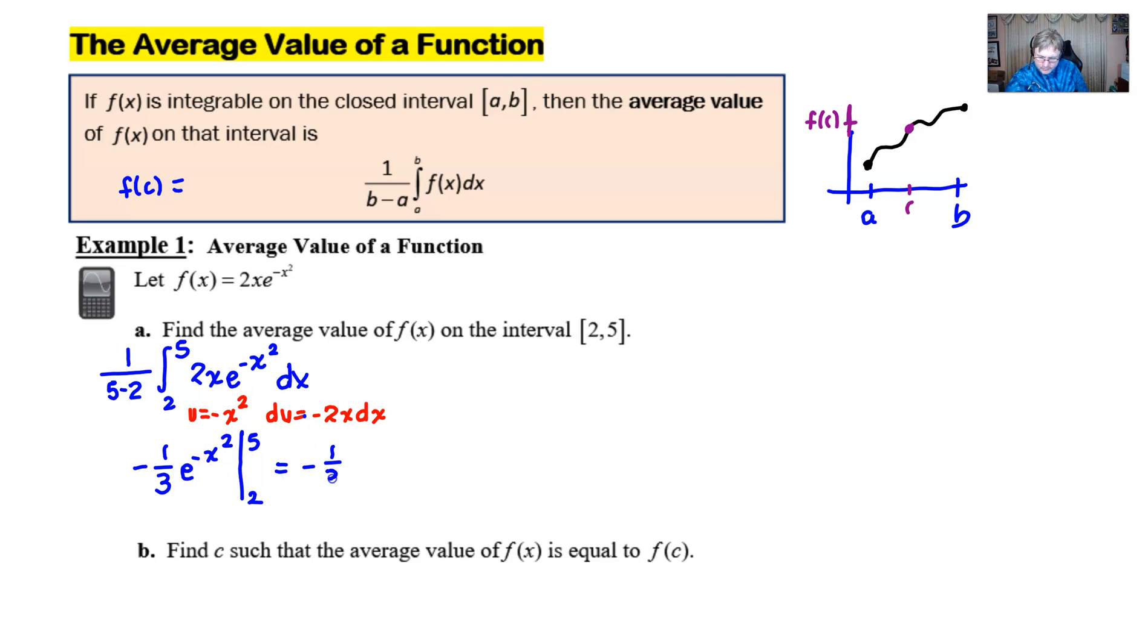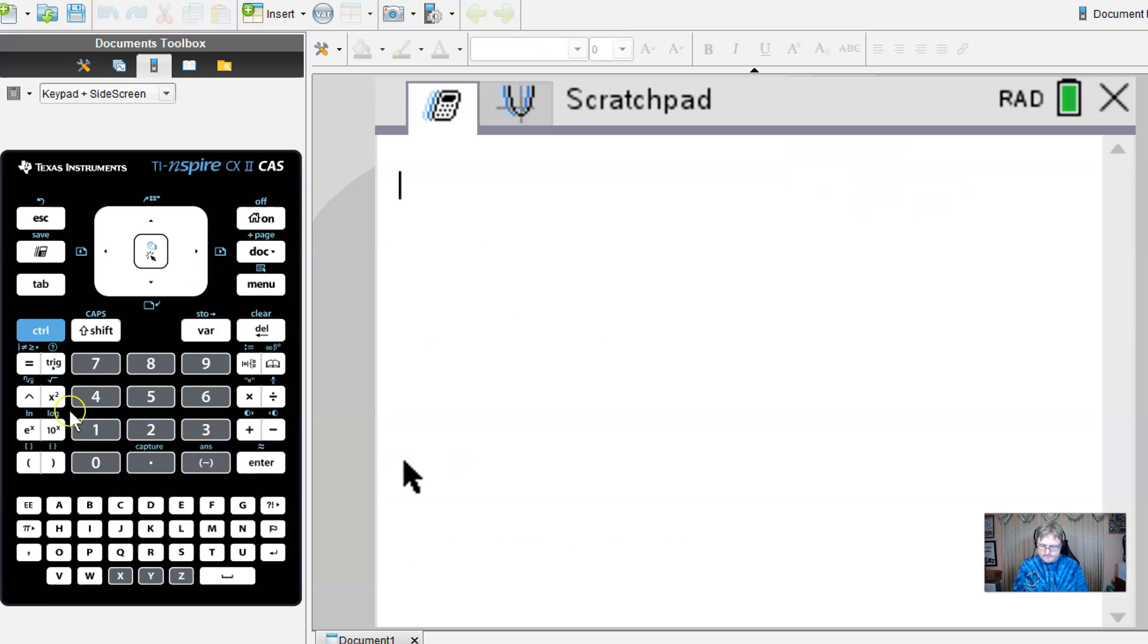What we've really got here is the integration of e to the u. His answer is e to the u, which is e to the negative x squared in this case. The one-third is still in front, and don't forget we had to offset with a negative. I can still use my boundaries of 5 and 2 because notice I've taken myself back to the world of x. If I were to simplify, I'll keep that negative one-third factored out. I'll replace the x with 5, I end up with e to the negative 25, then I'll subtract e to the negative 4.